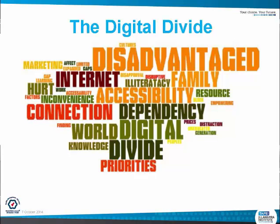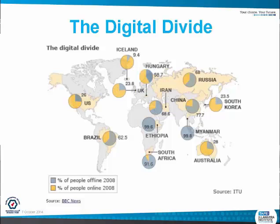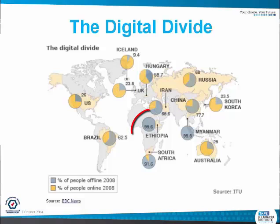I've put this snapshot on just to note the digital divide between rich and poor and the advantages and disadvantages they have. For the poor ones, they will be disadvantaged — they'll have less access, they'll be more dependent, less knowledge, less priorities, more distraction. The digital divide map shows Iceland is highly online, and then you'll also have Ethiopia which is very, very low and hardly ever online.